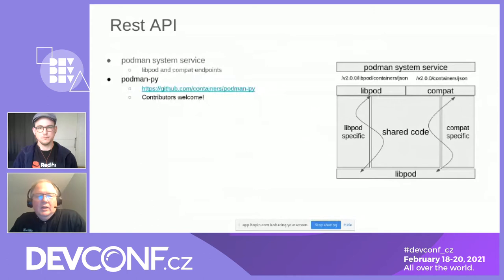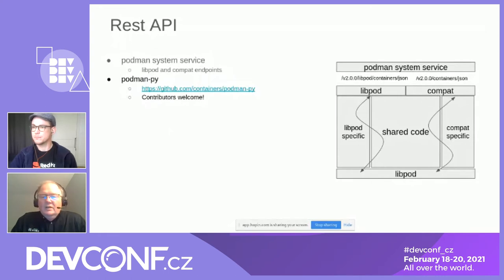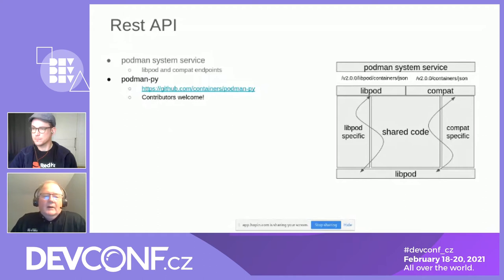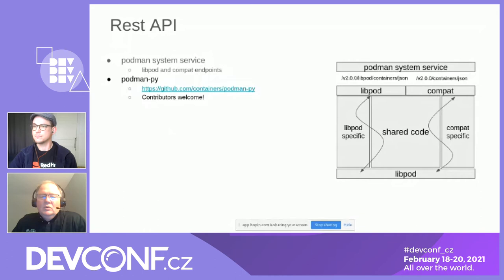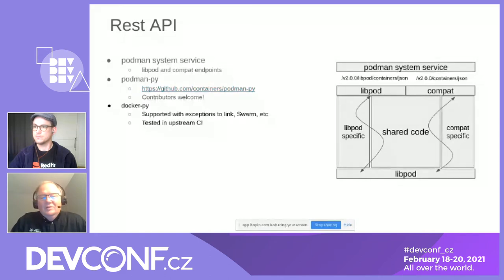For the REST API, there is a project called Podman PY being worked on upstream — it's somewhat fledgling and we really need contributors to help build out the Python wrapper. With our compatibility layer, we have full support for Docker PY. Our goal is to allow people to replace Docker with Podman, and we actually have Docker PY testing running in our upstream CI to make sure we don't break anything.